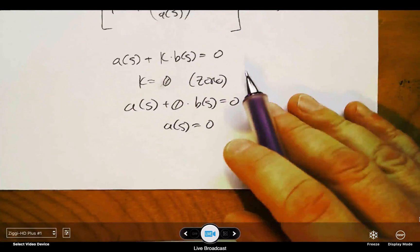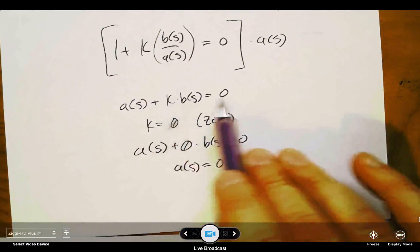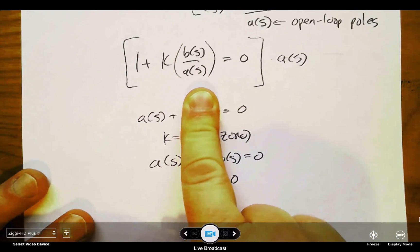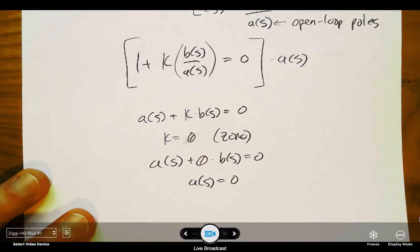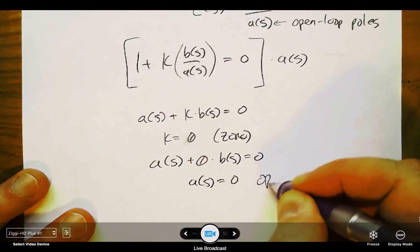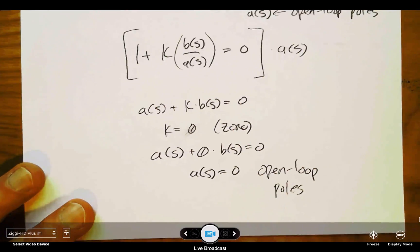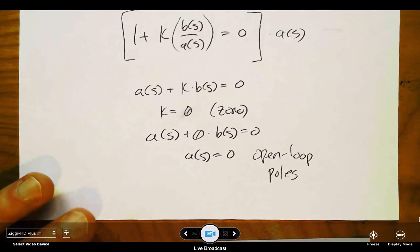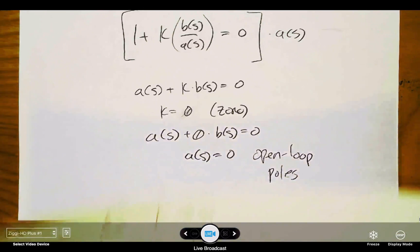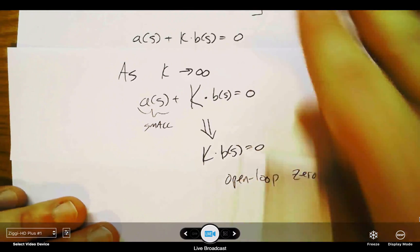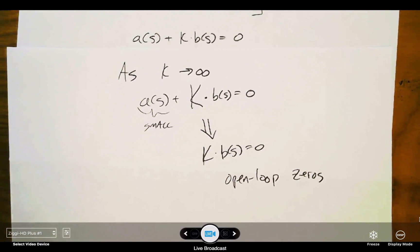So because we can reformulate to this equation, when k is zero, we just have a equal to zero. And that's just the denominator of L, so those are the open-loop poles. For small k, we start at the open-loop poles of L. And then as k gets really large, a becomes insignificant, and we end up at the open-loop zeros, or the roots of b.